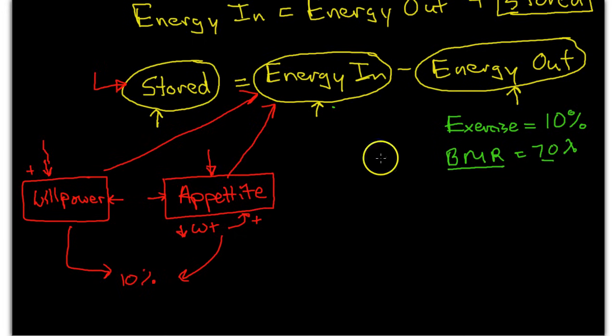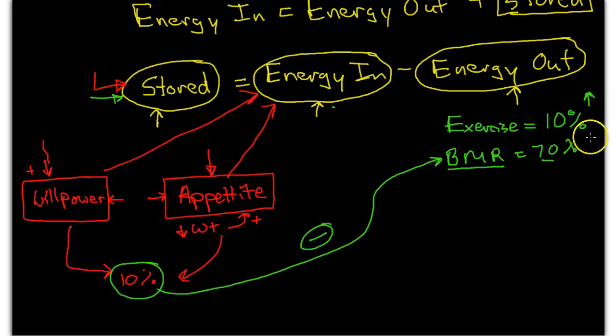What's interesting is the body really does not like a negative energy balance. It wants to maintain this storage of energy. So what does it do? When we lose weight, when this energy store is going down, the body actually fights against us and decreases the basal metabolic rate. So even if we try to increase exercise to 20 or 30%, the body can actively fight against us by reducing the amount of energy we're using from our basal metabolic rate.